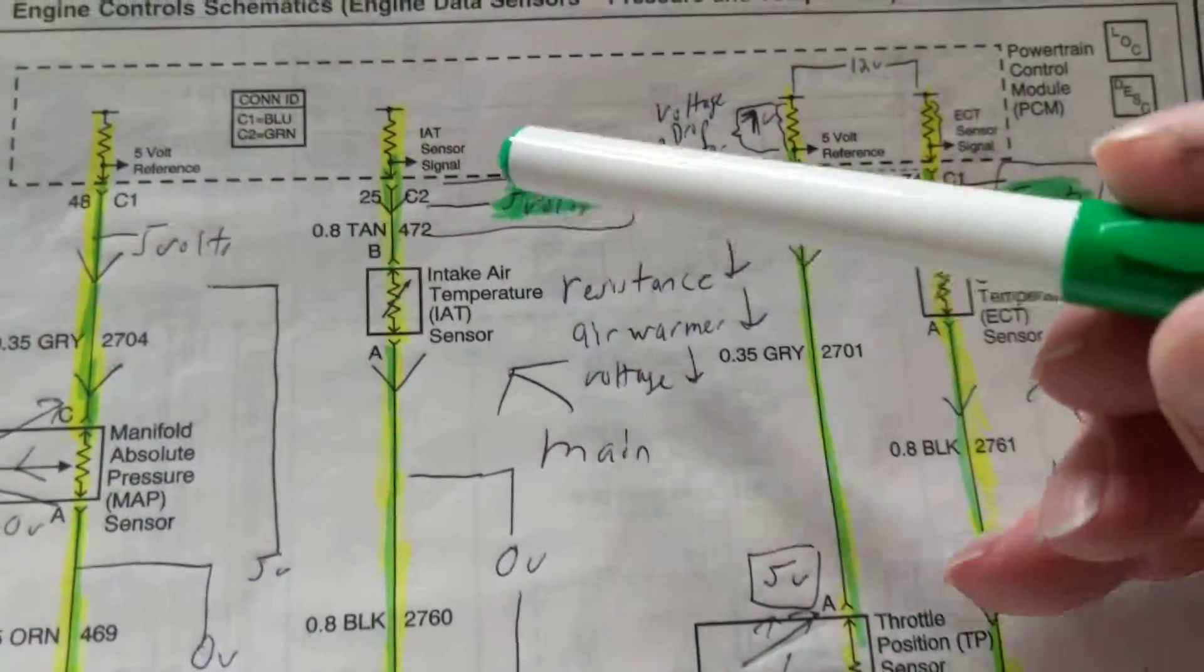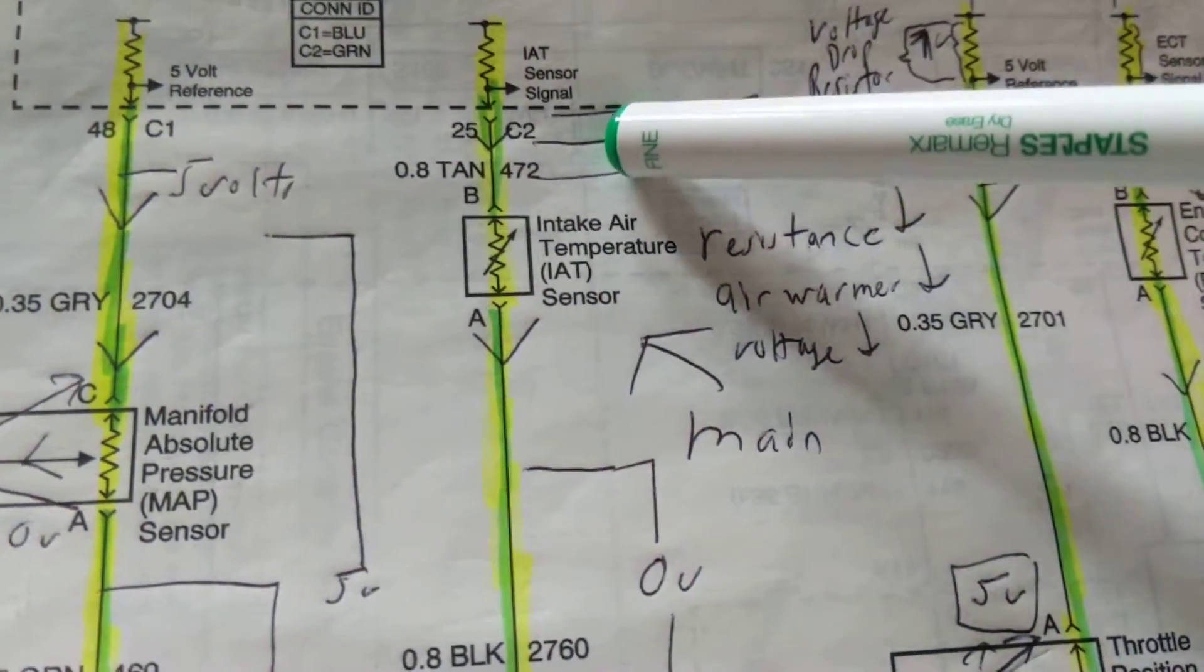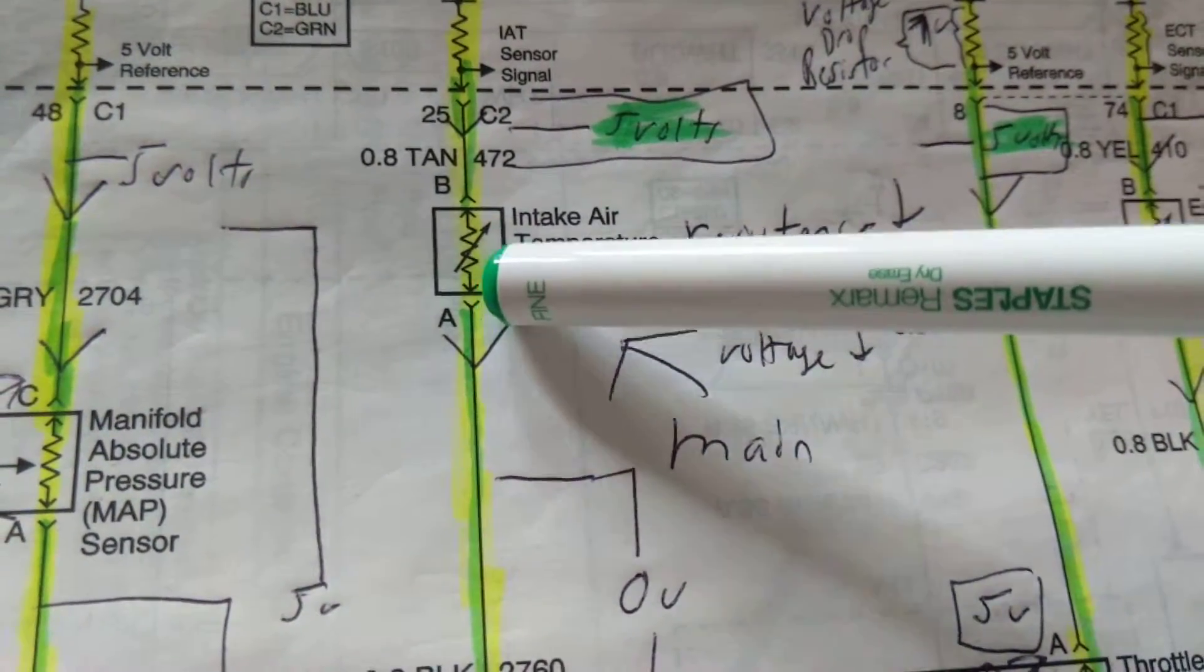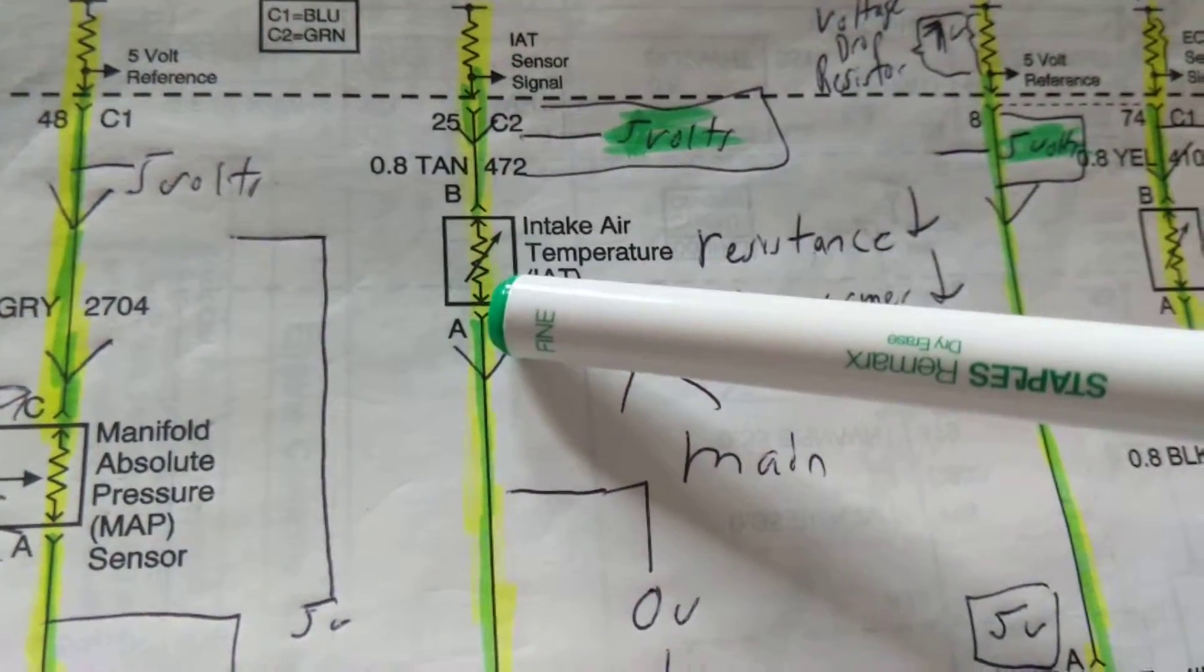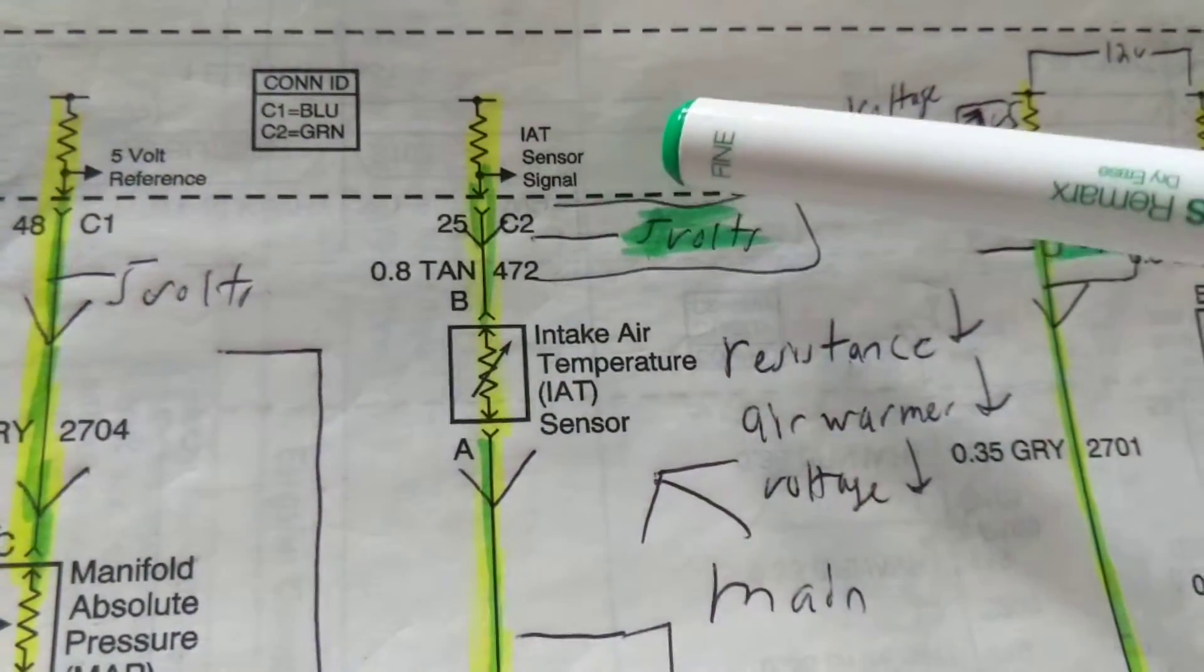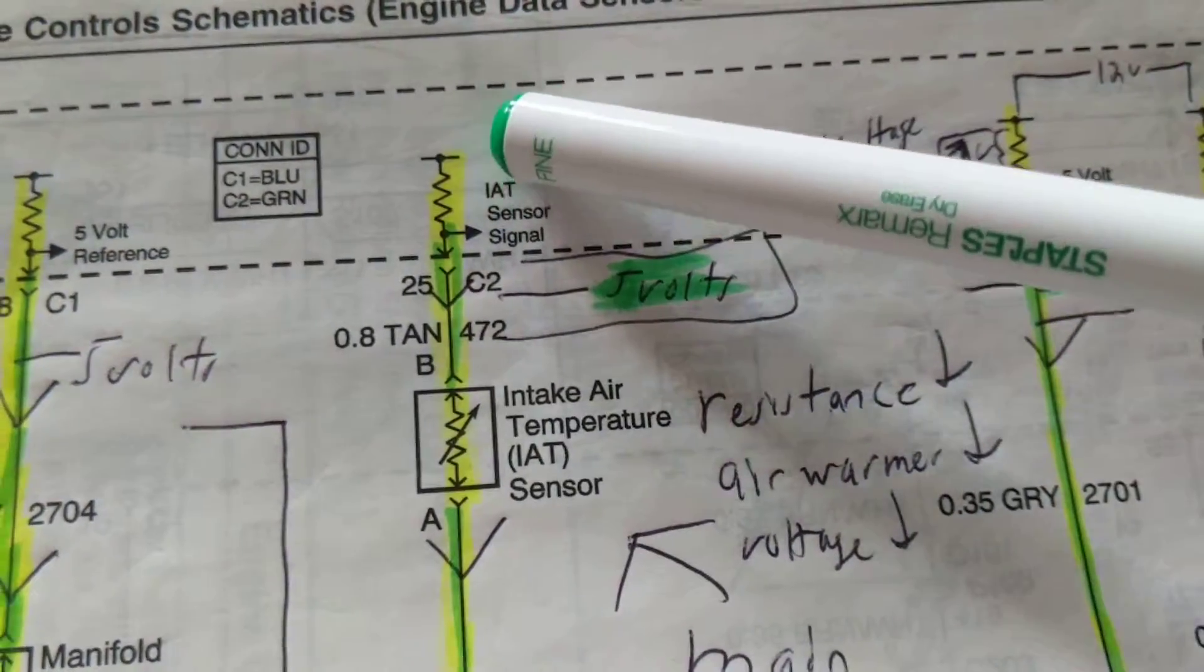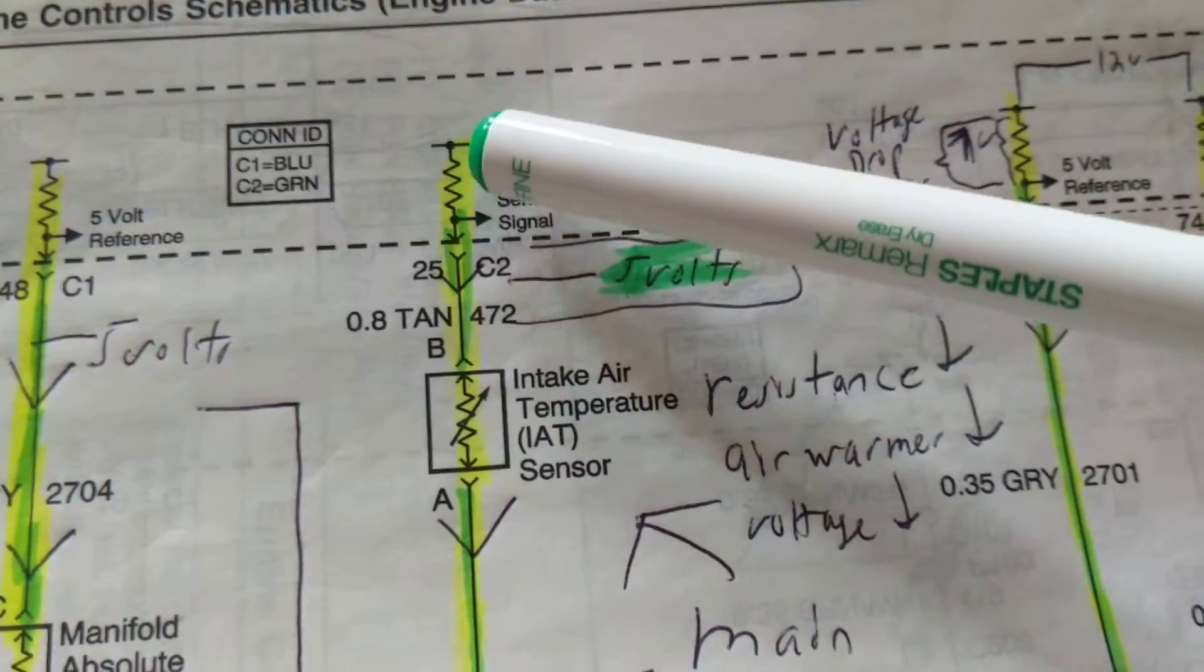When I spoke about intake air temperature, that means it's looking at how much the temperature is of the air coming into the air chamber. So therefore it is a resistor, a thermistor they call it - in other words, with heat the resistance will go down. When the resistance goes down, the voltage will also go down. However, what's the reference voltage? We know the PCM works at 12 volts. There is a resistor here, a voltage resistor over here.